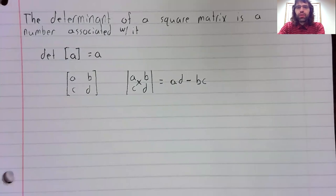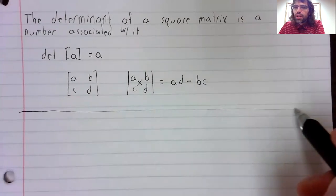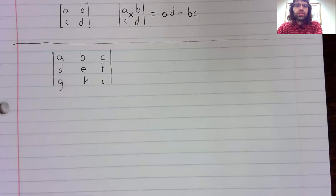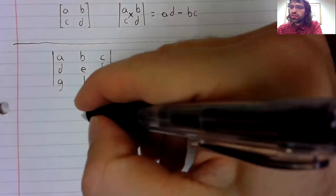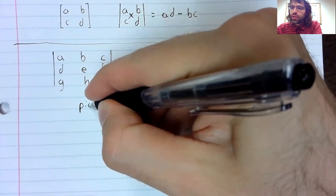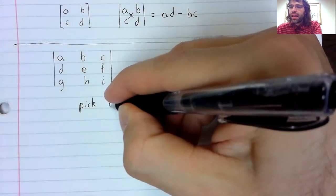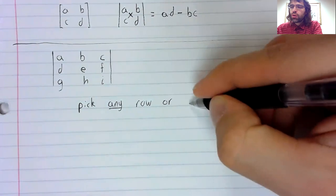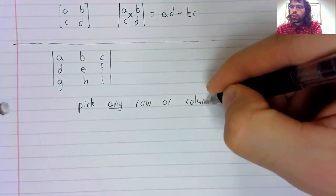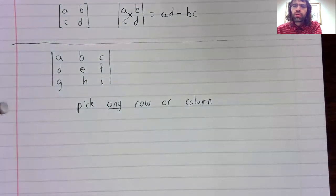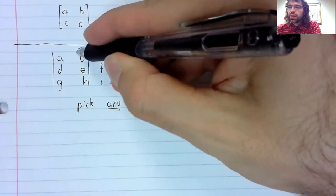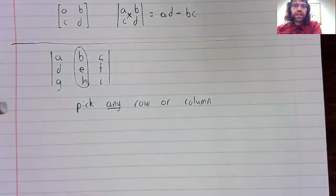And now here's where things are going to get messy. The determinant of a three-by-three matrix. We're going to pick any row or column. It doesn't matter which one. Eeny, meeny, miny, moe. Let's pick the second column.